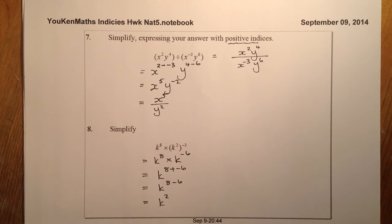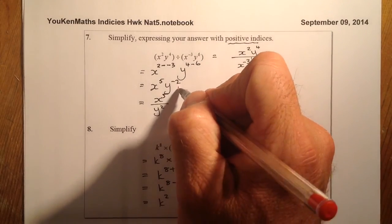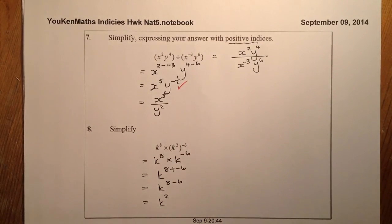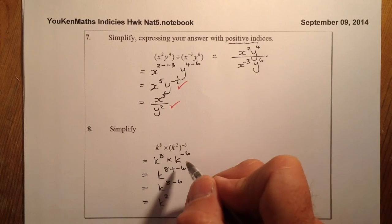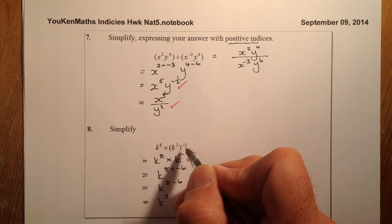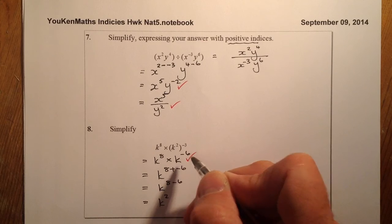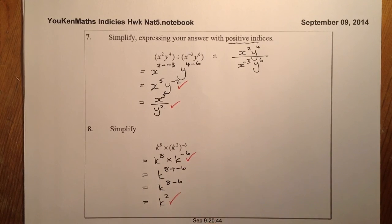For marking, question 7 has two marks: one for evaluating the expression and one for positive indices. Question 8 has one mark for evaluating k squared to the power of minus 3 to get k to the minus 6, and one mark for the final answer. That's four marks total for questions 7 and 8, and 16 marks so far for the homework.